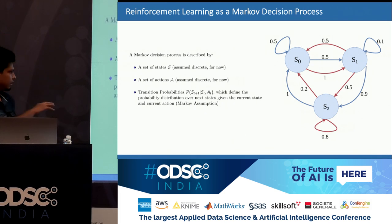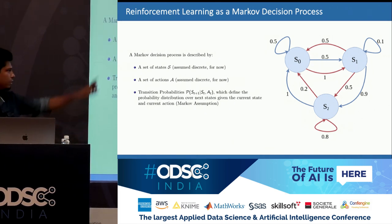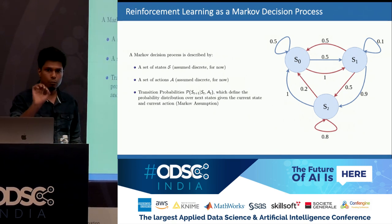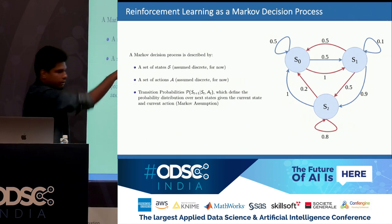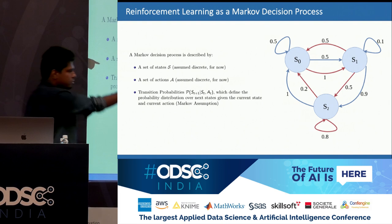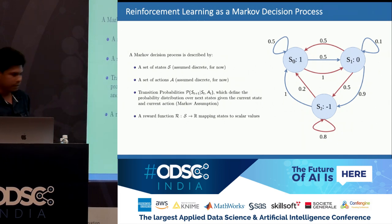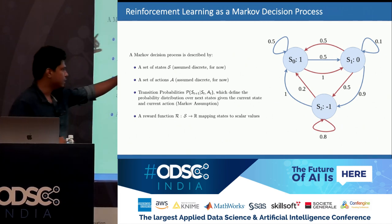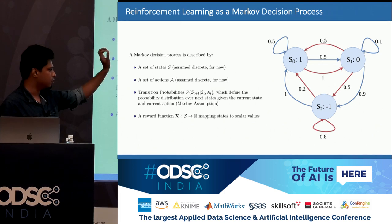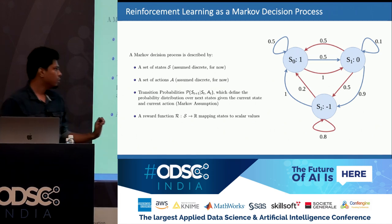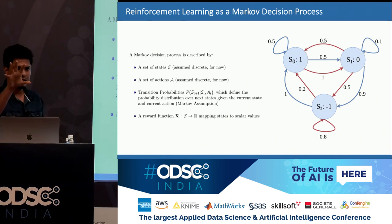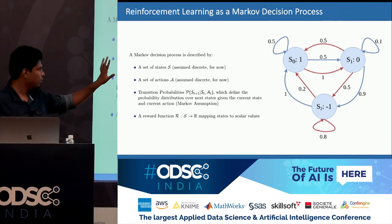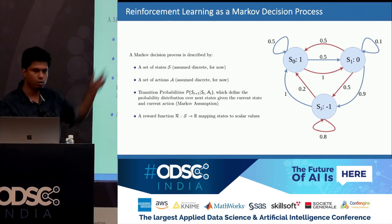This is encoded by something called the transition probability function. You can read this MDP as: from state S1, if you take the blue action, with 0.1 probability you go back to S1, or with 0.9 probability you go to S2. Finally, you have rewards associated with each state — state S0 has a reward of 1, state S1 has 0, and state S2 has minus 1. Ideally you would want to take actions that let the agent stay in state S0 as much as possible.